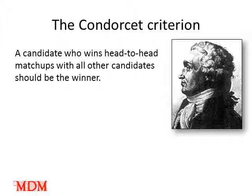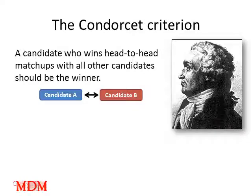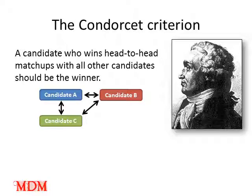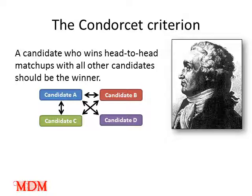Head-to-head match-ups are those which involve only two candidates. If there are three candidates — A, B, and C — then there are three possible head-to-head match-ups: A versus B, A versus C, and B versus C. If there are four candidates — A, B, C, and D — then there are six possible head-to-head match-ups. We already have the three from the three-candidate case, and adding candidate D gives us A vs. D, B vs. D, and C vs. D, for a total of six possible head-to-head match-ups. There is a formula that tells us the total number of head-to-head match-ups: for n candidates, there are n times (n minus 1) divided by 2 head-to-head match-ups possible.